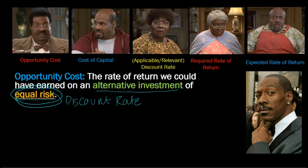And so further on in this chapter, we will basically be assuming that the discount rate that we are given is appropriately adjusted for the level of risk that is there in our cash flows. Remember that our opportunity cost or our discount rate must reflect the level of risk that we're taking on when we are investing in a project.